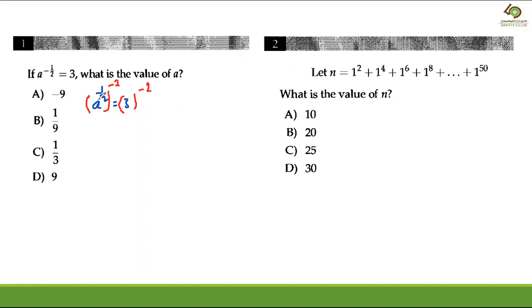Why? Because if you multiply minus half to the power minus two, the answer will be a. And here three to the power minus two. So what is the answer?